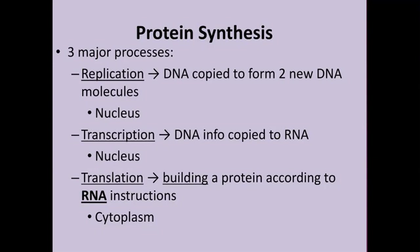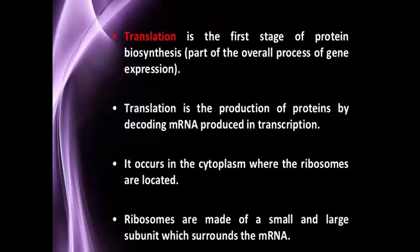The third process is translation, which is the main part of protein synthesis. Here the decoding of genetic information of mRNA occurs, and finally we form a protein in the cytoplasm. Translation is the process by which we decode mRNA genetic information to synthesize protein, occurring in the cytoplasm, where ribosomes are very important.